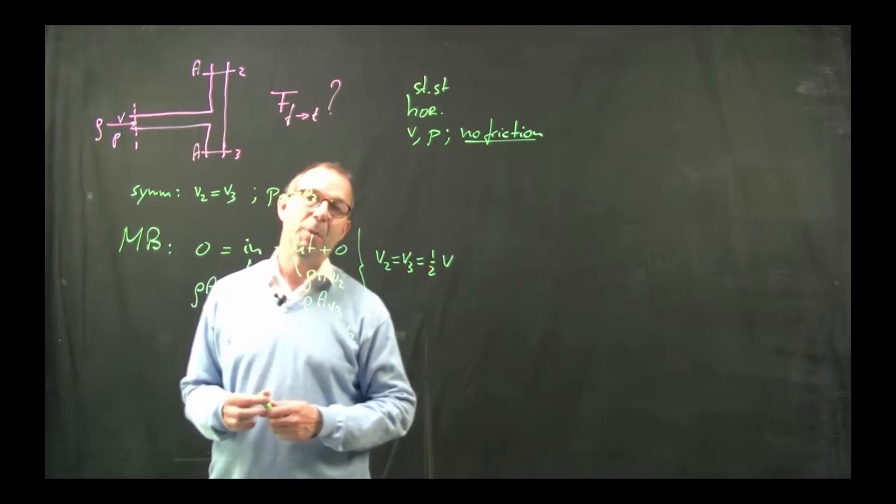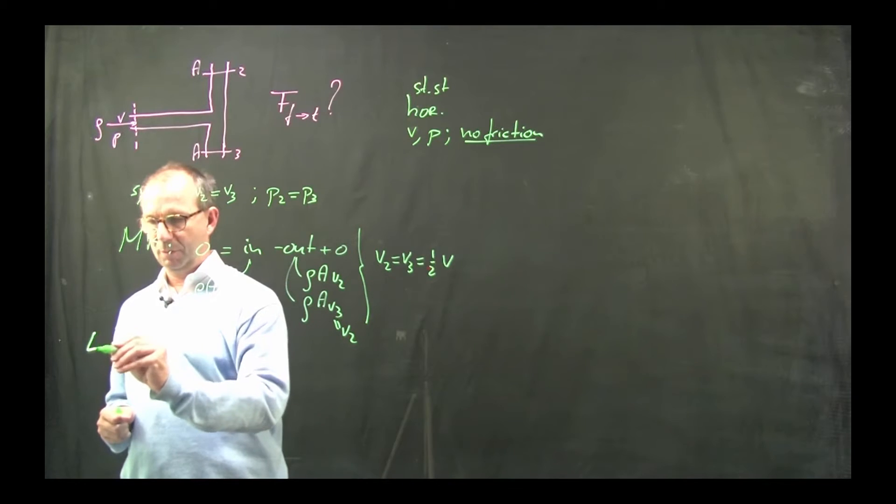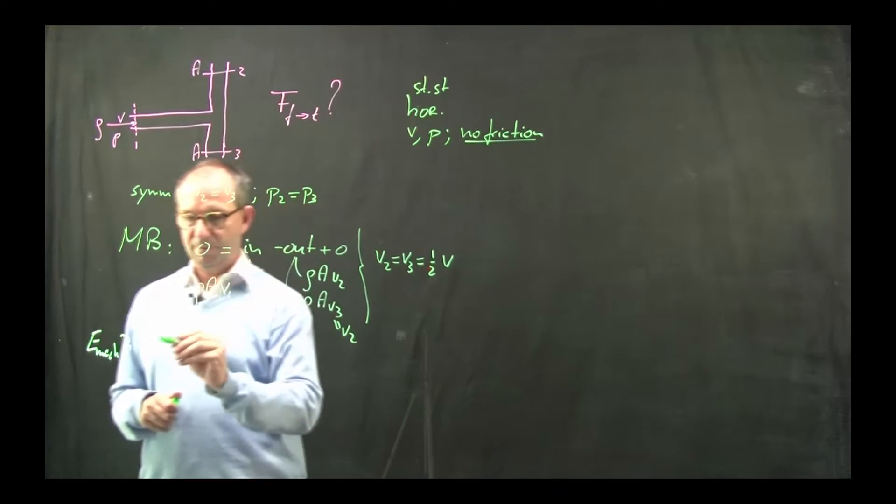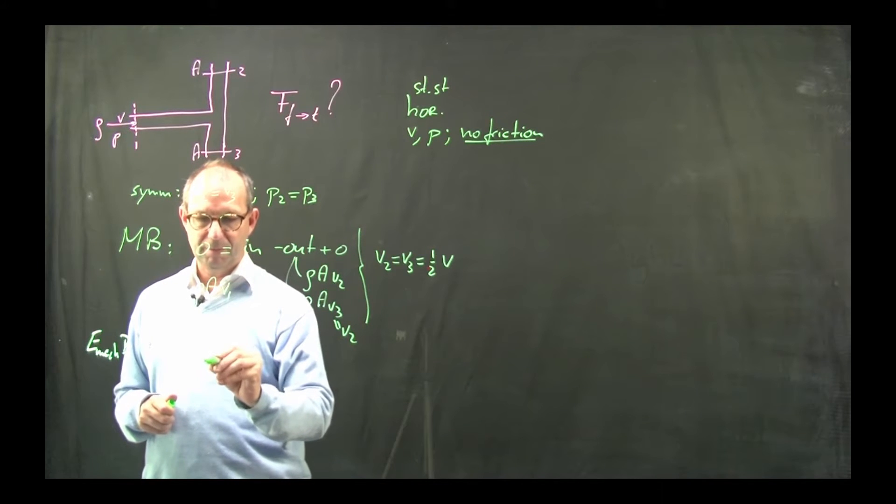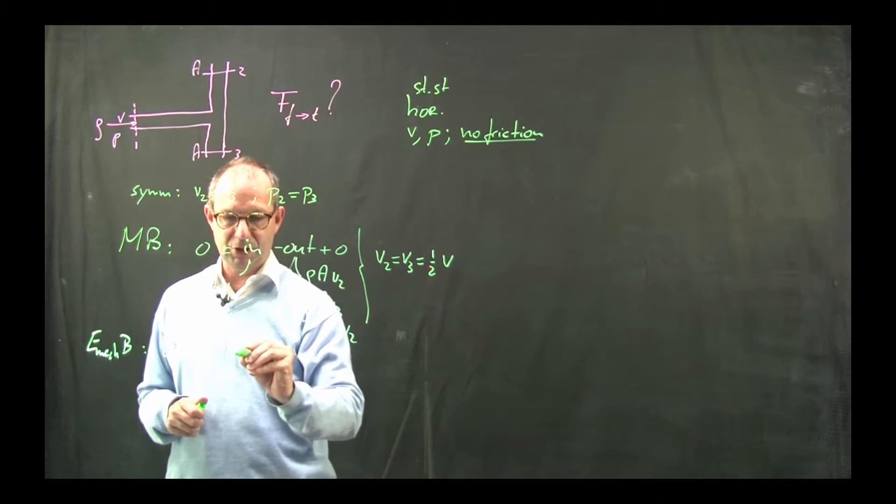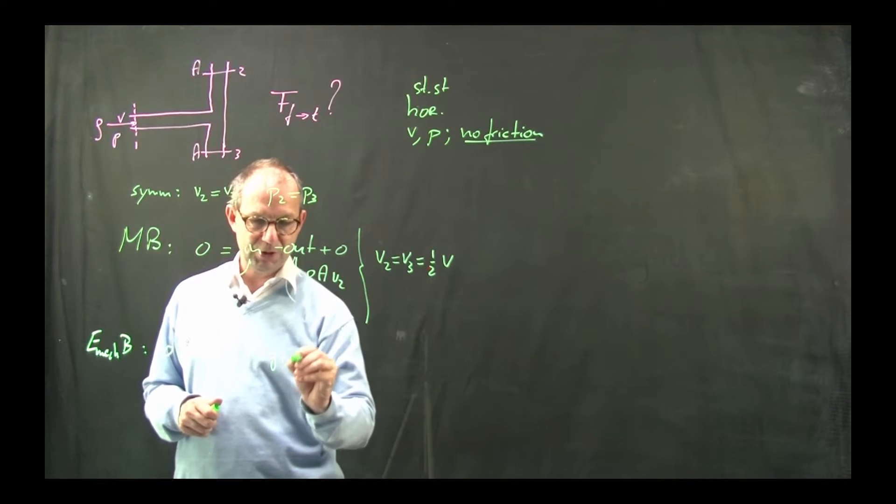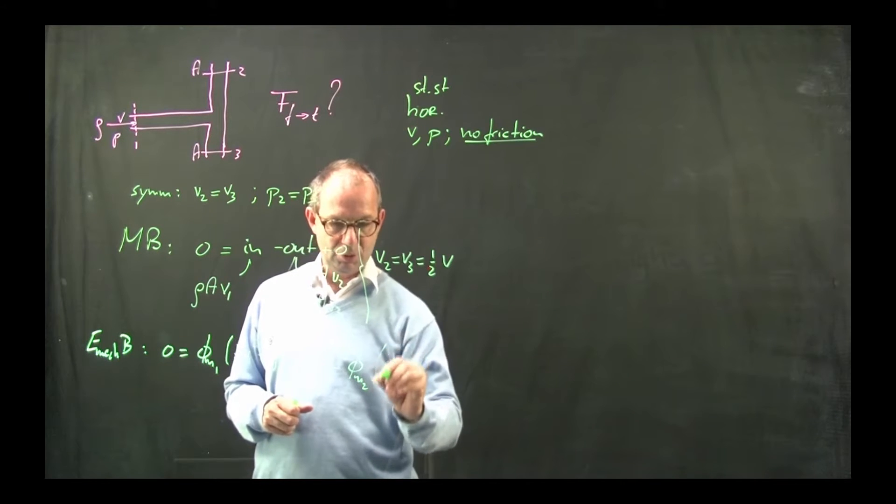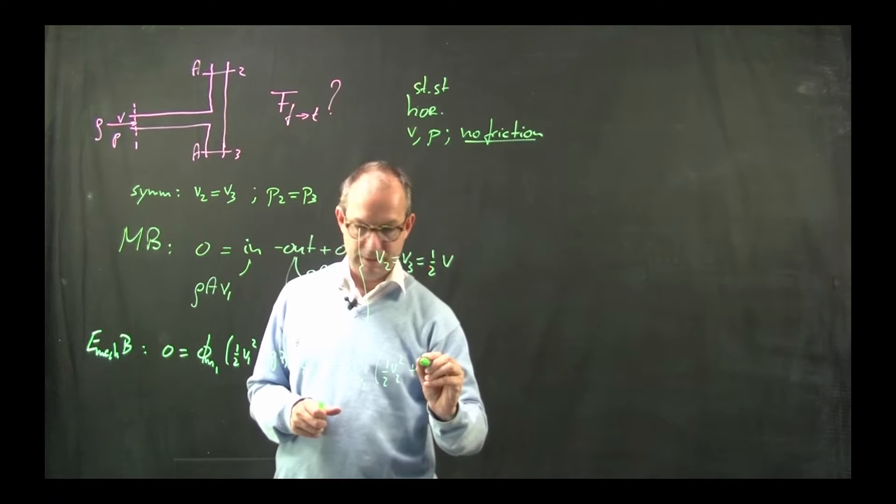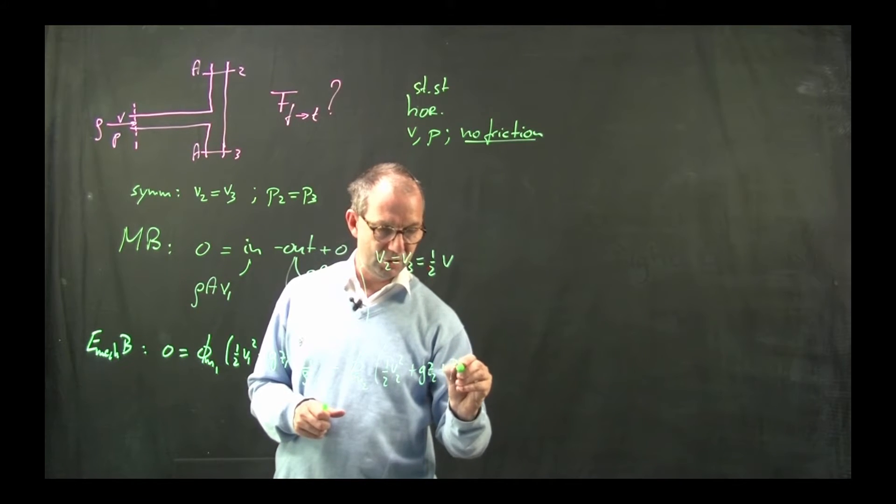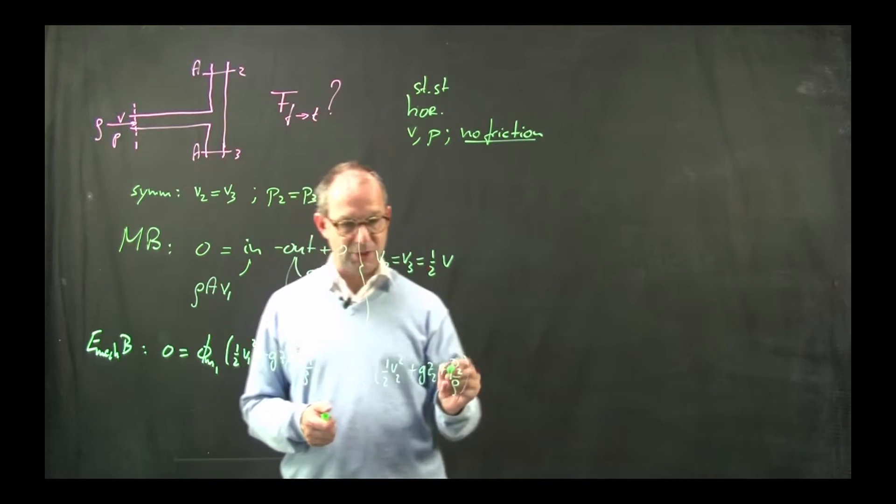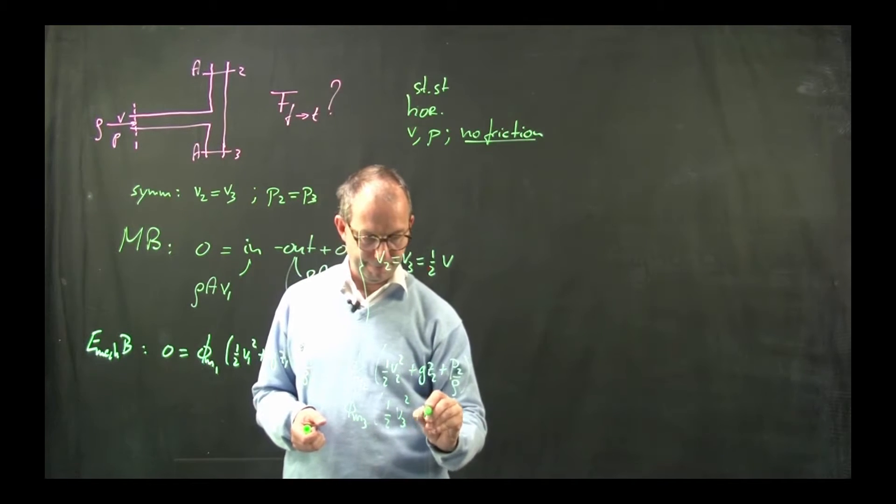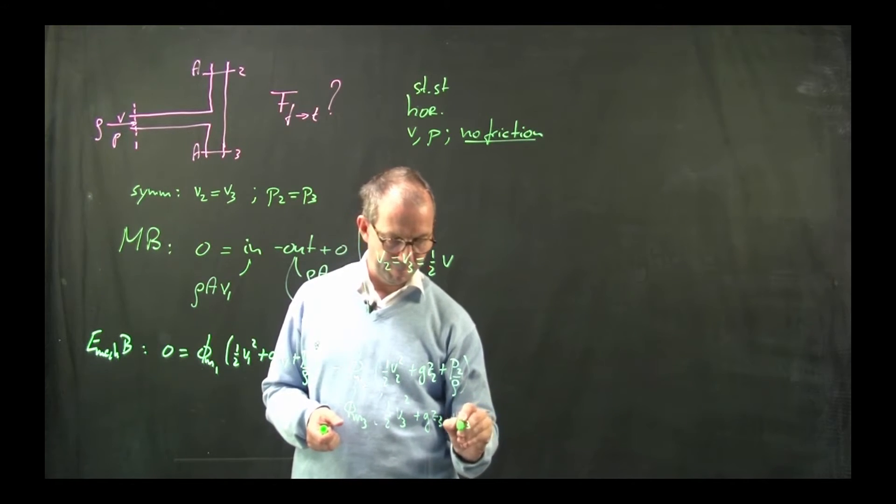Right, got that squared. So I know the velocities. I also for the momentum balance later on need the pressure. And I can find that from a mechanical energy balance as there is no friction hence no dissipation. And I do know the velocities. So this reads as incoming at position 1 is a flow that carries mechanical energy of these forms. And there are two outflows.